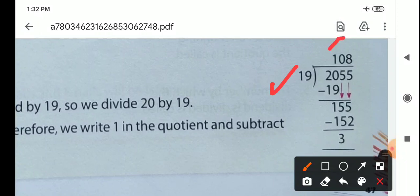19 times 1 is 19. 20 minus 19 is 1. Then bring down 5. We take 15.